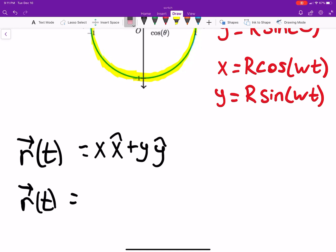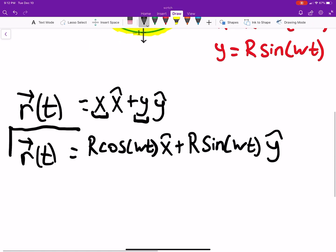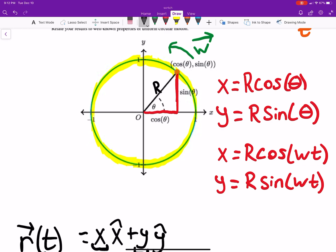x is r cosine omega t, we have our unit vector x hat, plus y. So this y and this x are what we're replacing. This y is r sine omega t and then y hat for our unit vector. And this bit right here is describing our position. This describes where on this highlighted, this blue highlighted yellow circle, the particle's at.